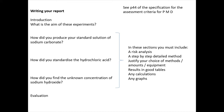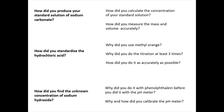And then the evaluation — I'll talk about that in a bit. So, how did you produce your standard solution? How did you work out the concentration of the standard solution? How did you measure the mass and the volume accurately? When you're standardizing your hydrochloric acid, why use methyl orange? Why did you do the titration at least three times? How did you do it as accurately as possible? And then when you did the sodium hydroxide titration, why did you do it with phenolphthalein before you did it with the pH meter? Why and how did you calibrate the pH meter?